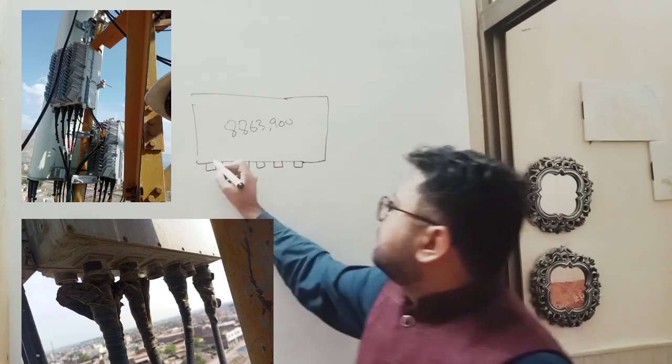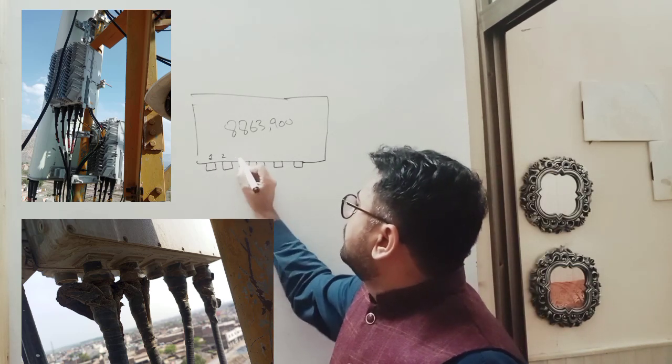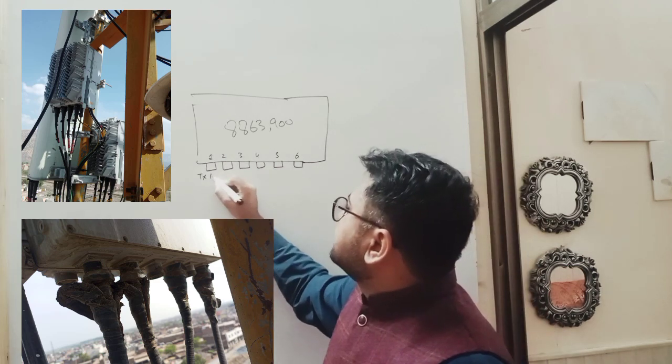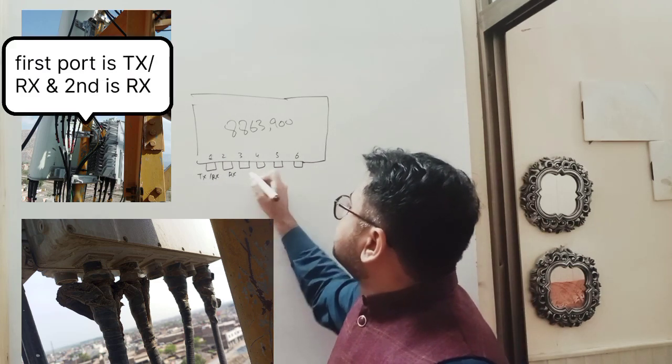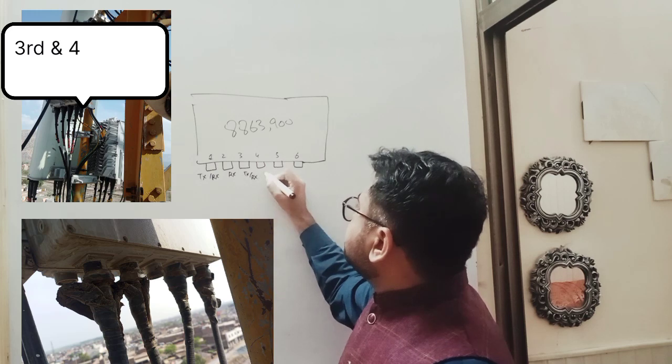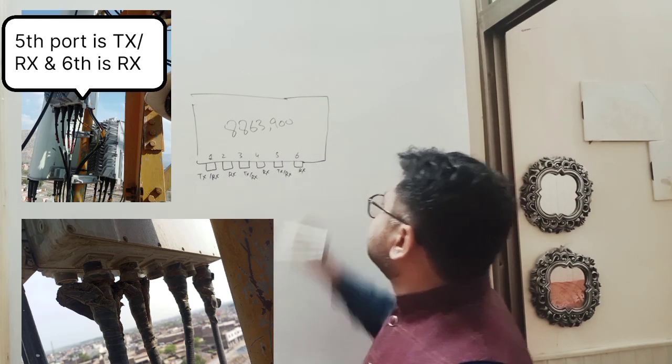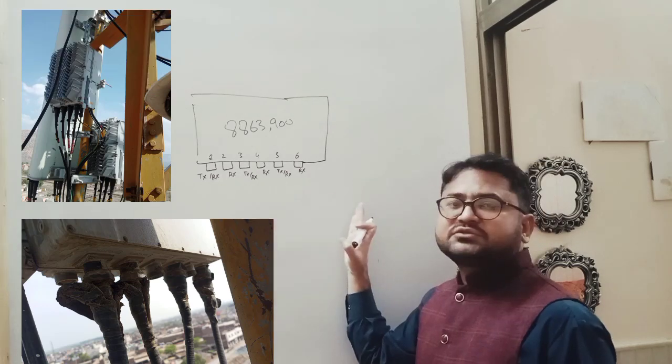As we know, the ports are port 1, 2, 3, 4, 5, 6. First port is TX-RX and second one is RX. Third one TX-RX, then RX, TX-RX and RX.